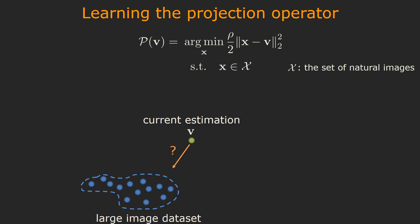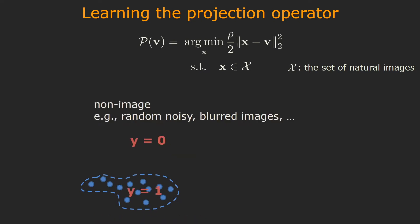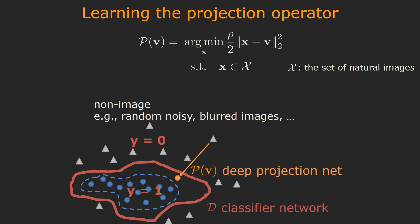In order to learn the projection operator P, suppose we have a large image dataset. We can perturb the images with random noise to create lots of non-image signals. Then we can train a classifier to approximate the set of natural images, after which we can learn the projection operator P with a deep neural net.